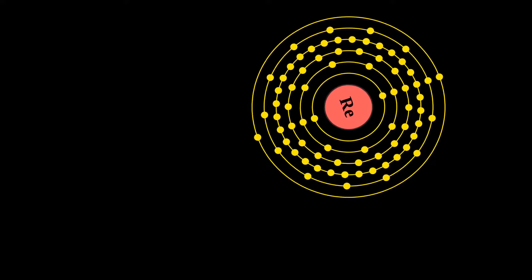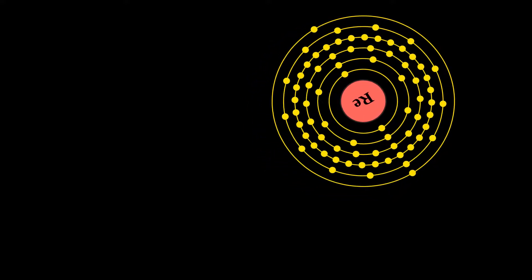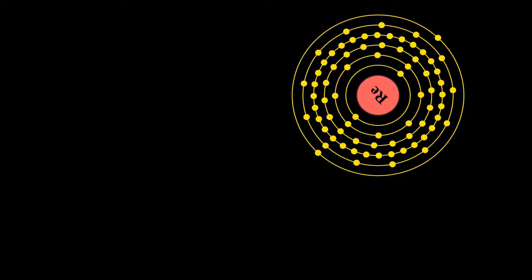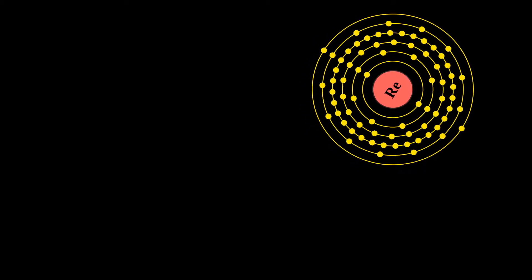Rhenium has the third-highest melting point and second-highest boiling point of any element at 5903 Kelvin. Rhenium resembles manganese and technetium chemically and is mainly obtained as a byproduct of the extraction and refinement of molybdenum and copper ores.